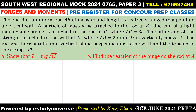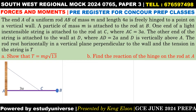Show that T equals mg√13, and find the reaction of the hinge on the rod at A. We start by drawing the diagram. We have a vertical wall and a horizontal rod — the horizontal position of the rod is its position of equilibrium. The rod is hinged to the wall at point A, and at point B it carries a particle whose mass is m. At point C we attach a light inextensible string such that the distance from A to C is 3a, and this string is also attached to the wall at point D where the distance between A and D is 2a.